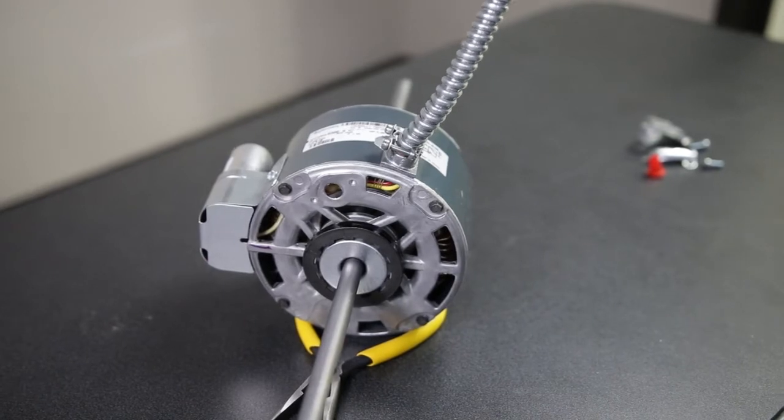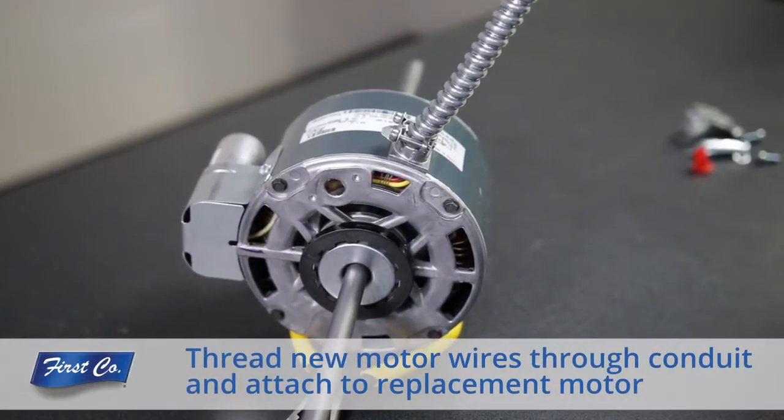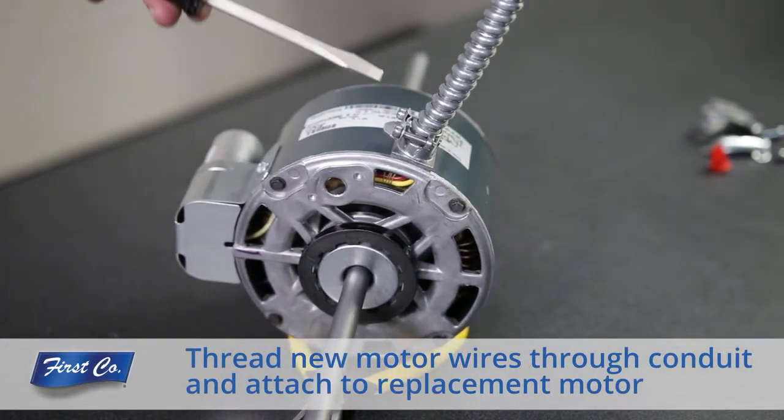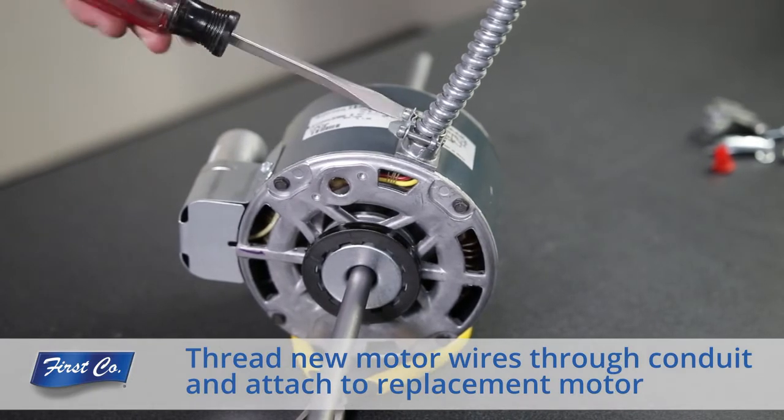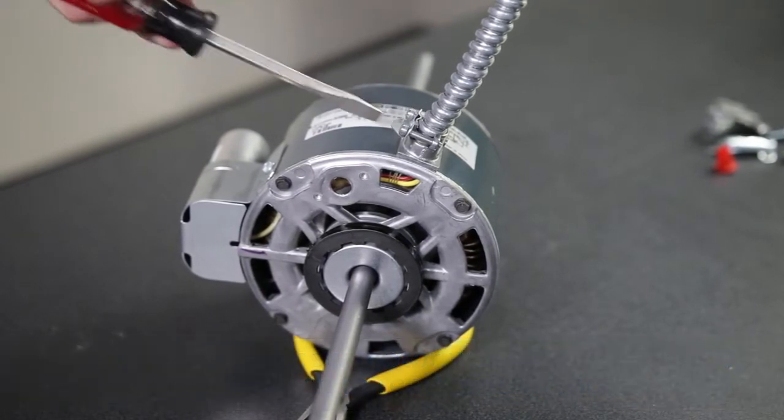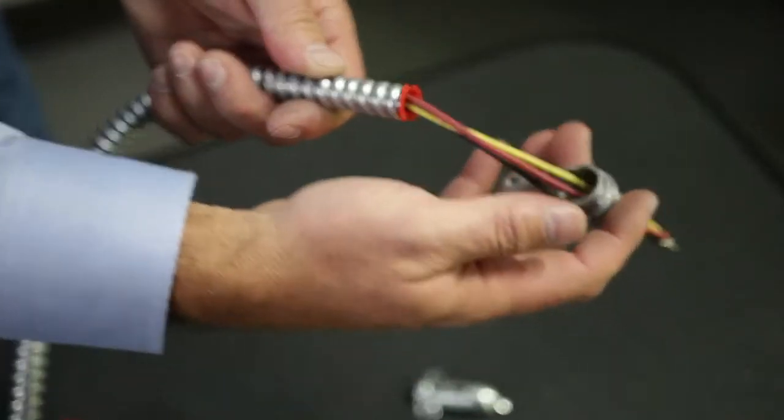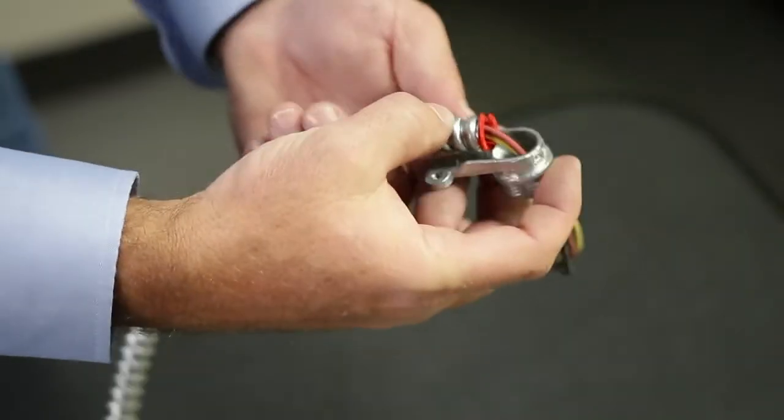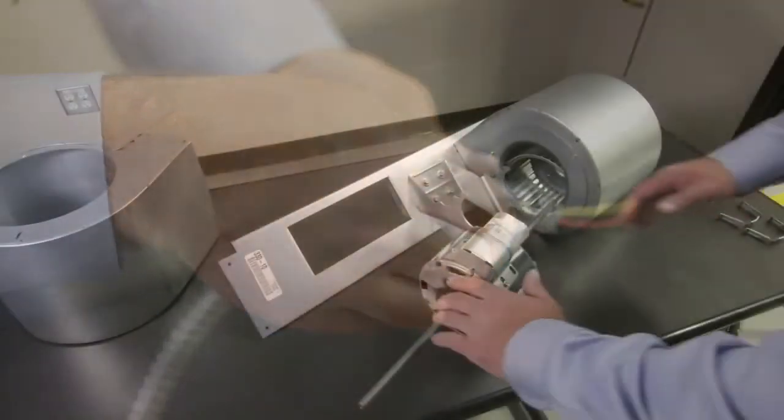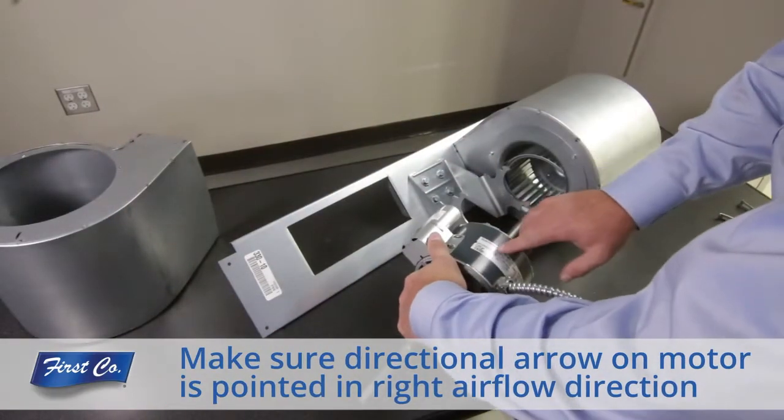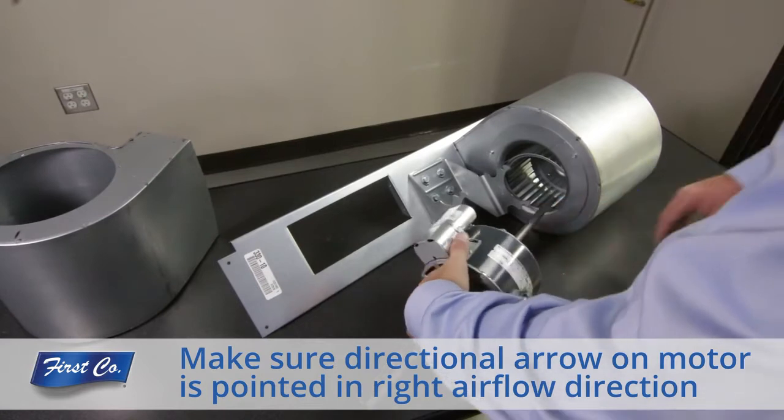Using the flexible conduit removed earlier, thread the motor wires through the conduit. Before installing the replacement motor, make sure the directional arrow on the motor is pointed in the right direction of airflow.